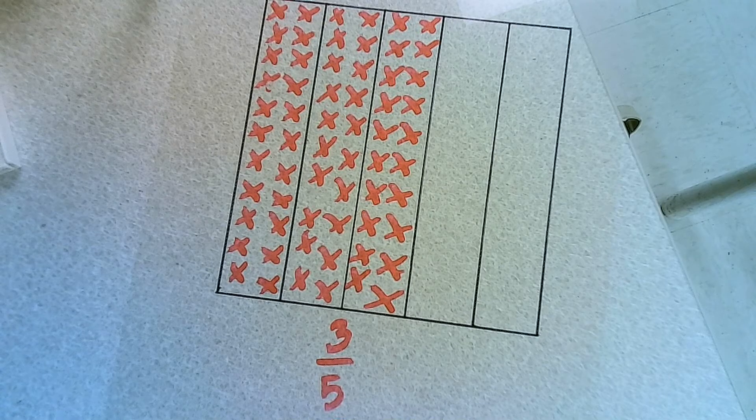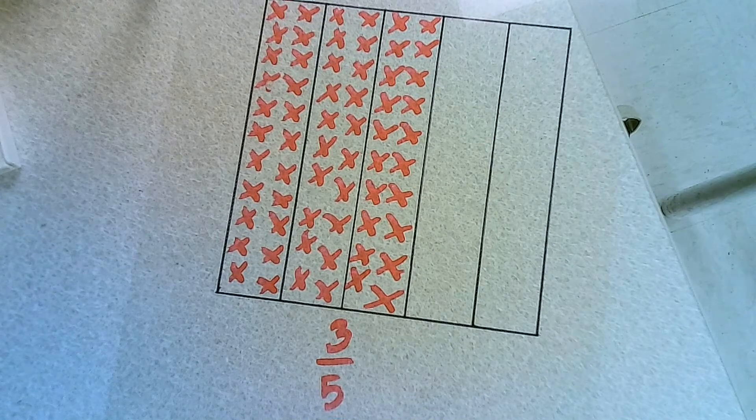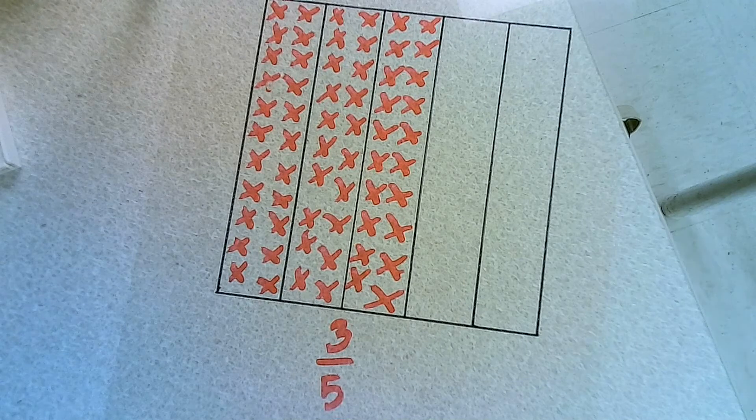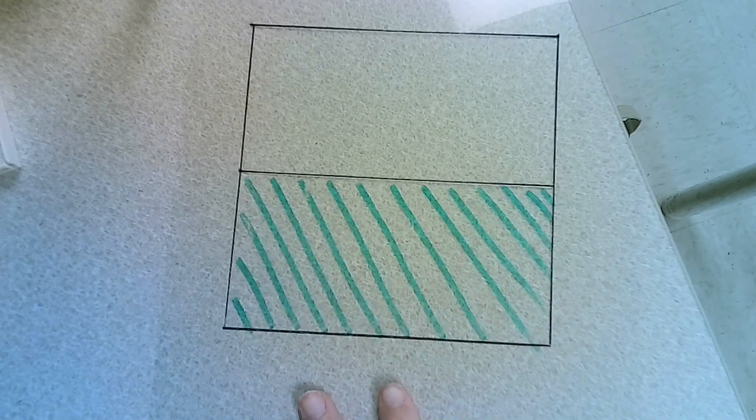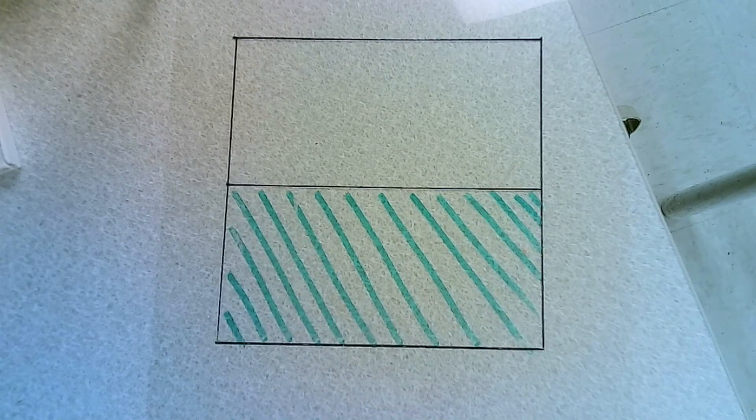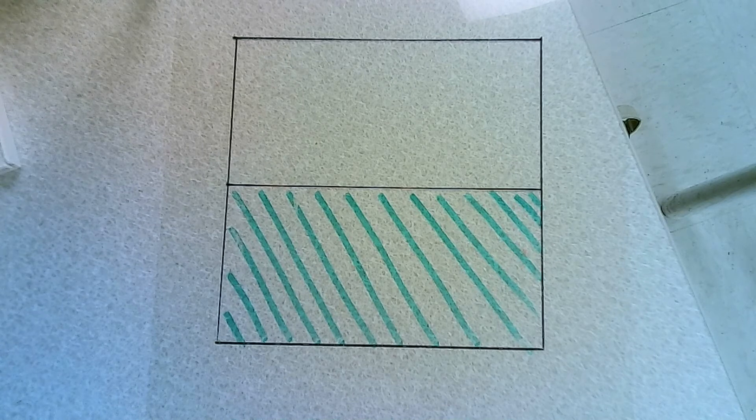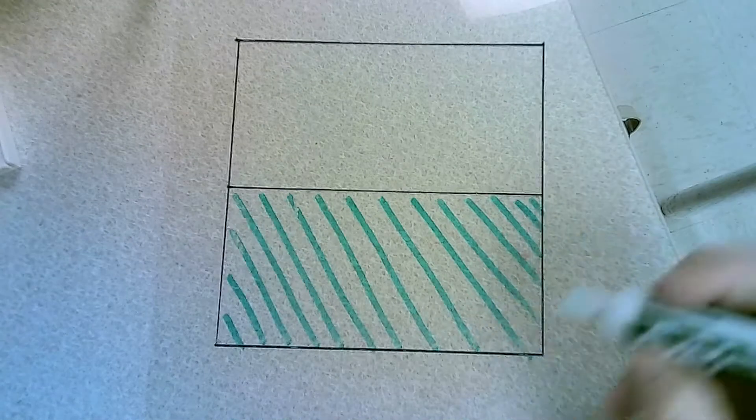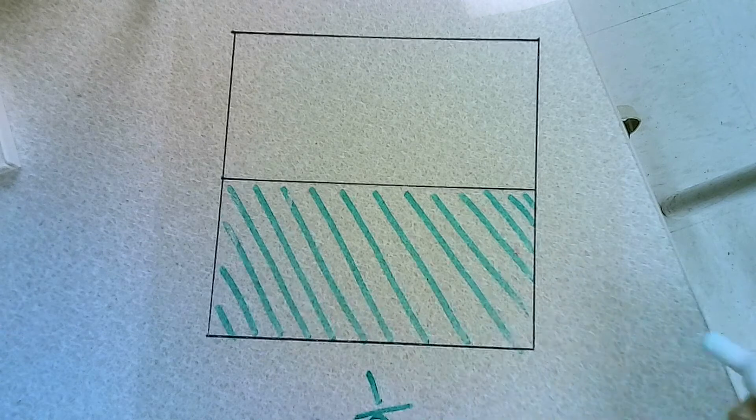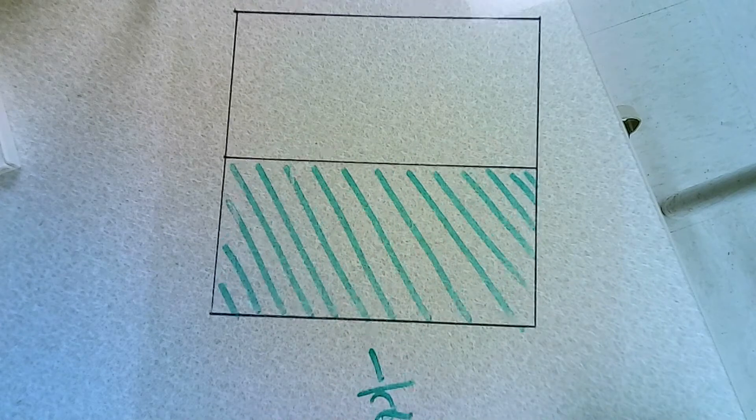Okay, so it is 3 fifths. Now let's look at another one. So this one, you should spot it right away. There are two pieces, and we have one of them. So it is 1 half.